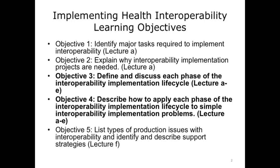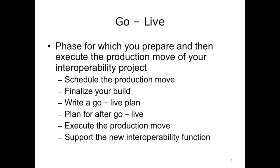In this lecture, you will be able to identify and describe the go-live phase of interoperability implementation. The go-live phase is when the system is ready to move over into production following the successful completion of all other tasks. It is the phase for which you prepare and then execute the production move of your interoperability project. It consists of scheduling the move, finalizing the build to be moved, writing a go-live plan, planning for after go-live, executing the production move, and initiating support for the new interoperability implementation.